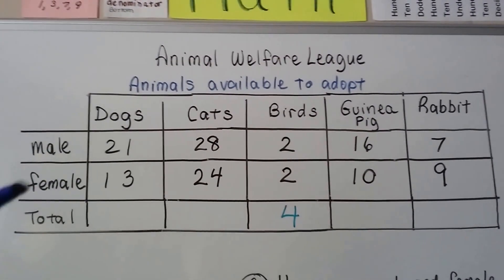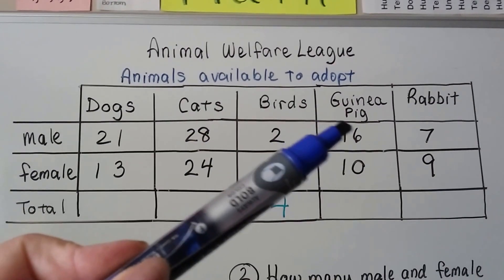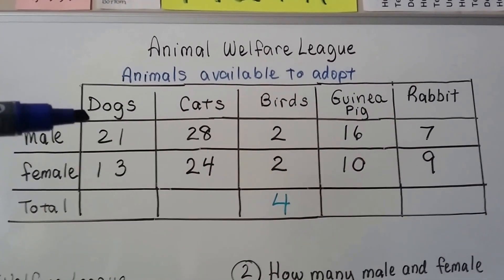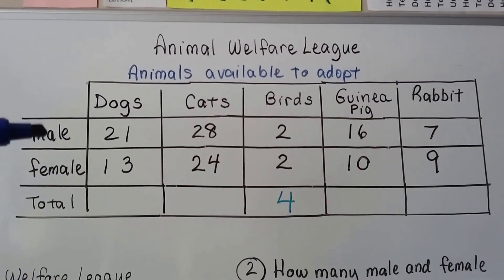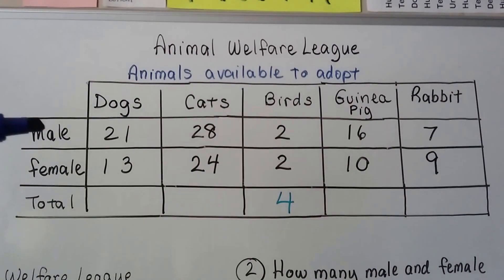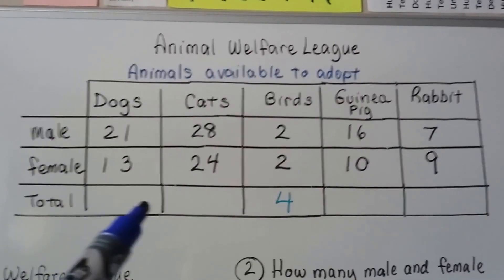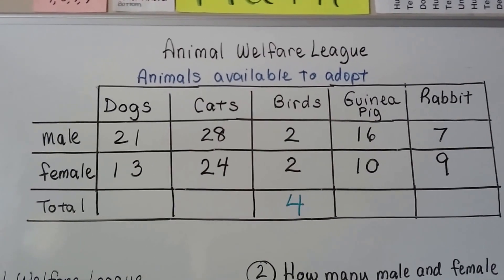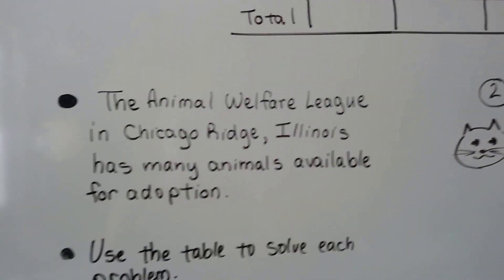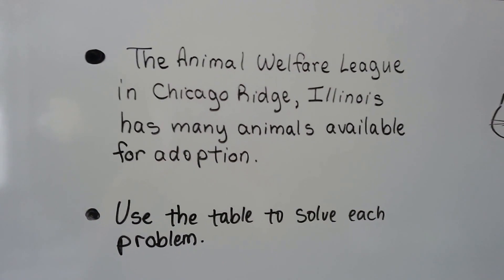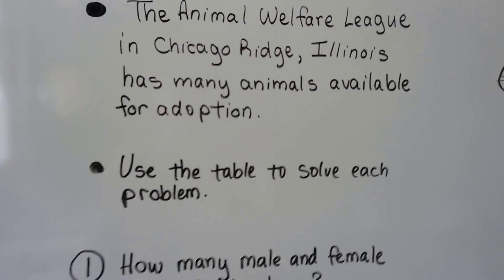You can see that they have dogs, cats, birds, guinea pigs, and rabbits. Each animal column type is split from male to female — it shows the male dogs, the female dogs. We don't have our totals yet; that's what we're going to be doing. The Animal Welfare League in Chicago Ridge, Illinois has many animals available for adoption. We're going to use the table to solve each of these problems.